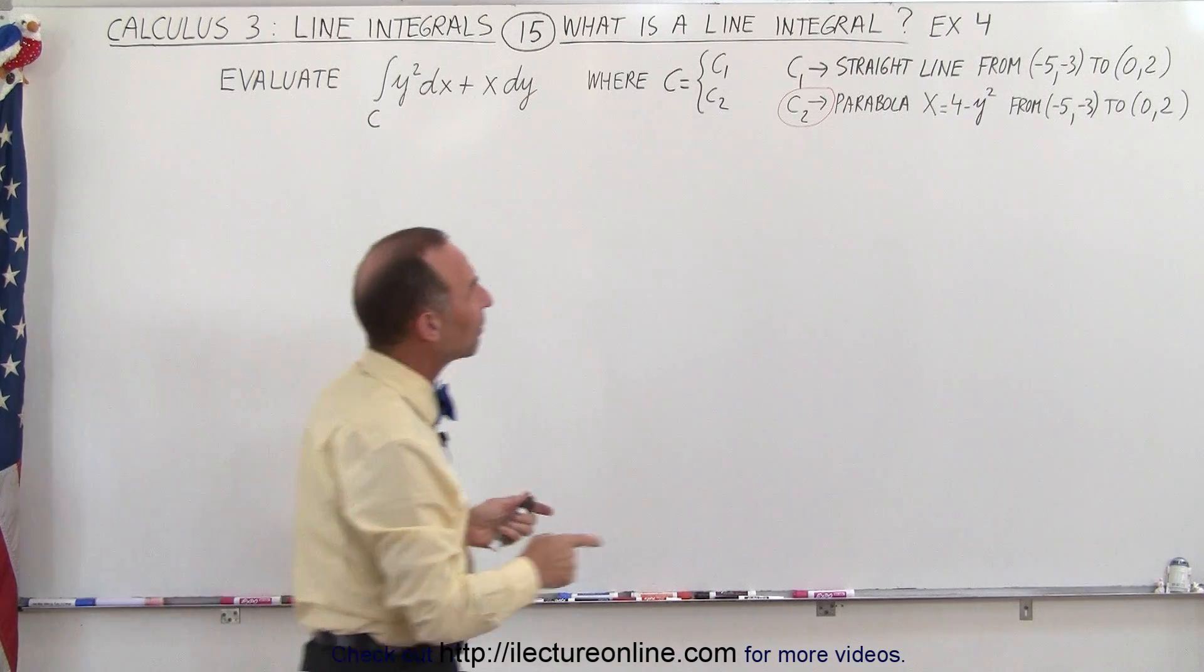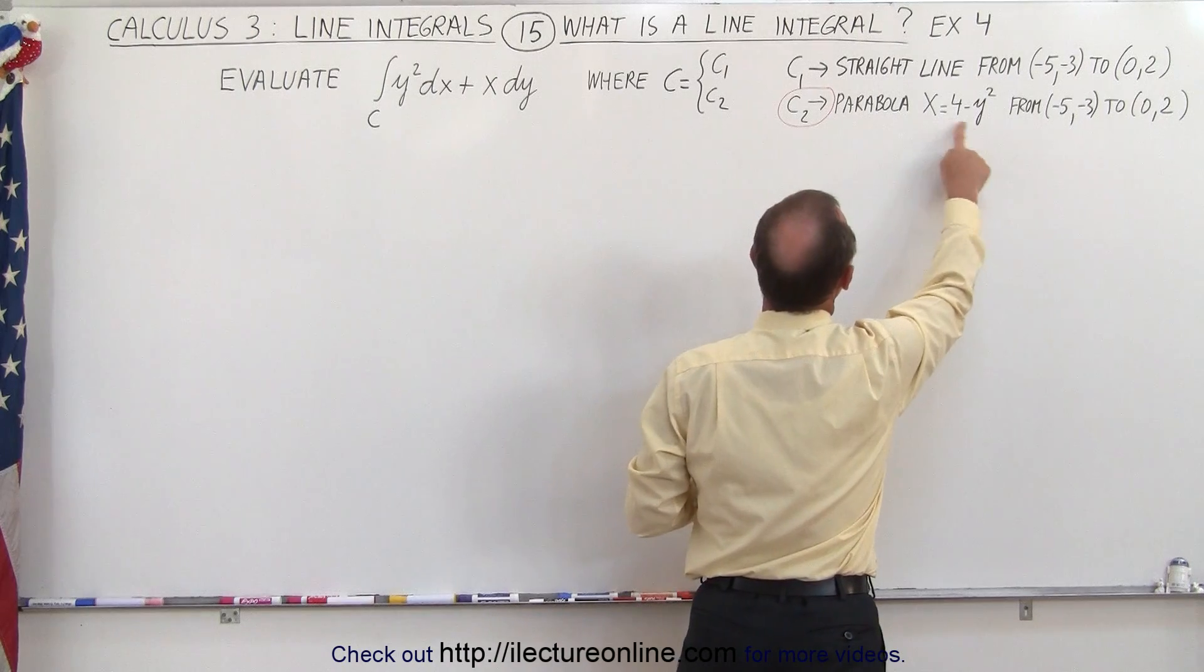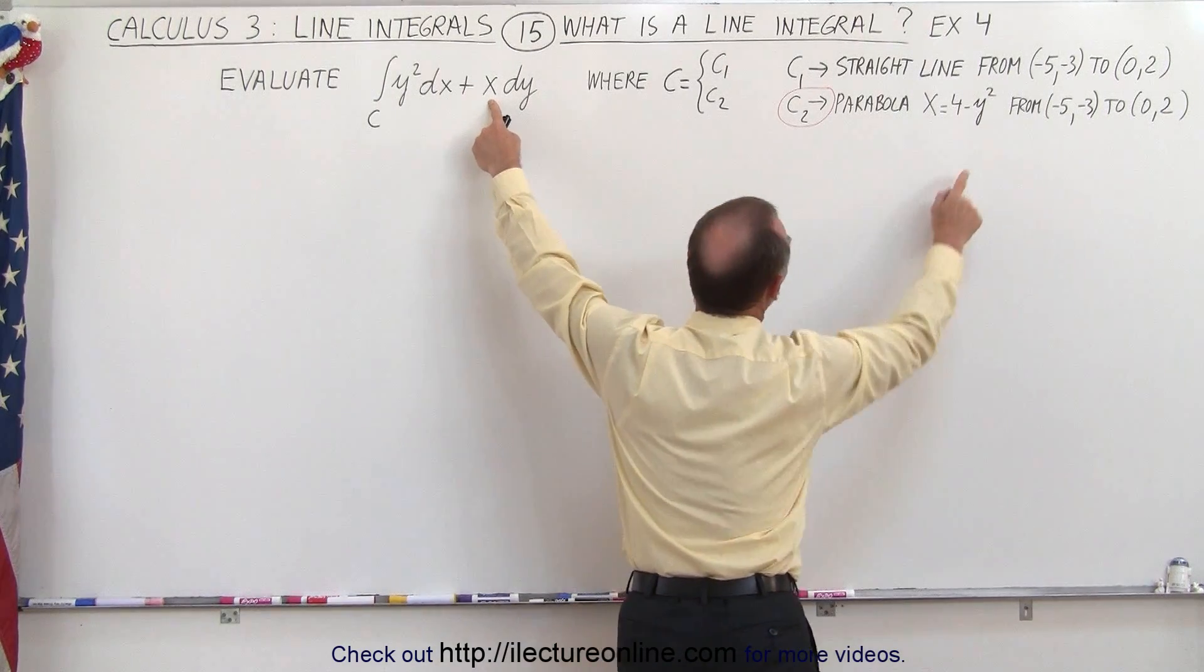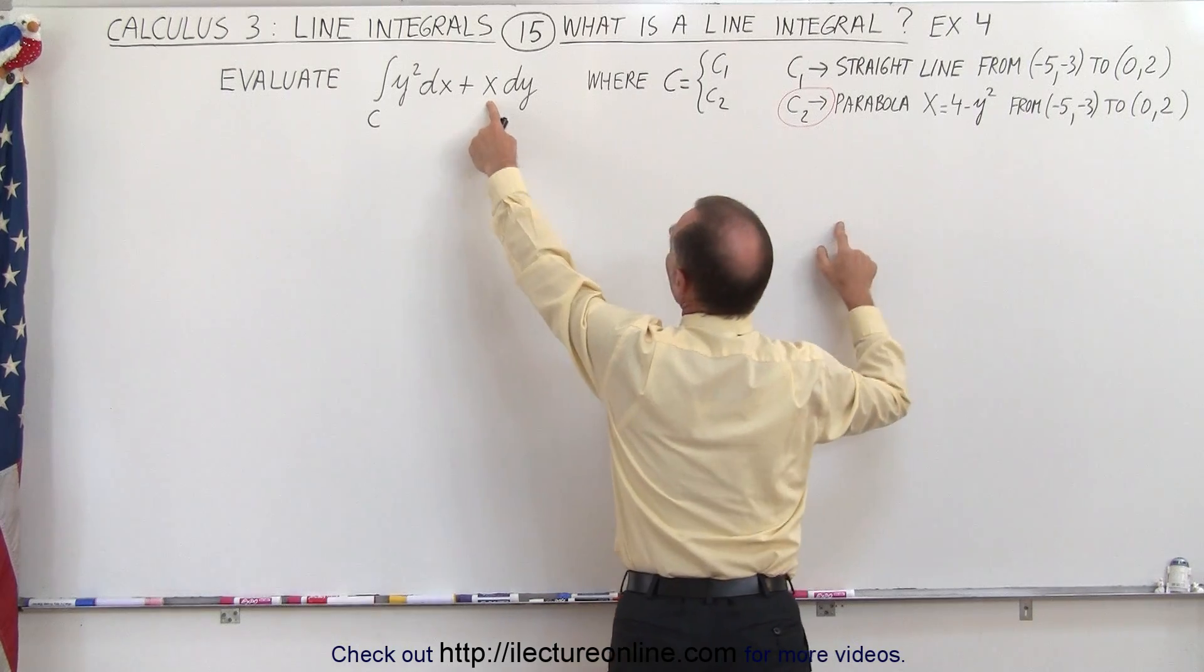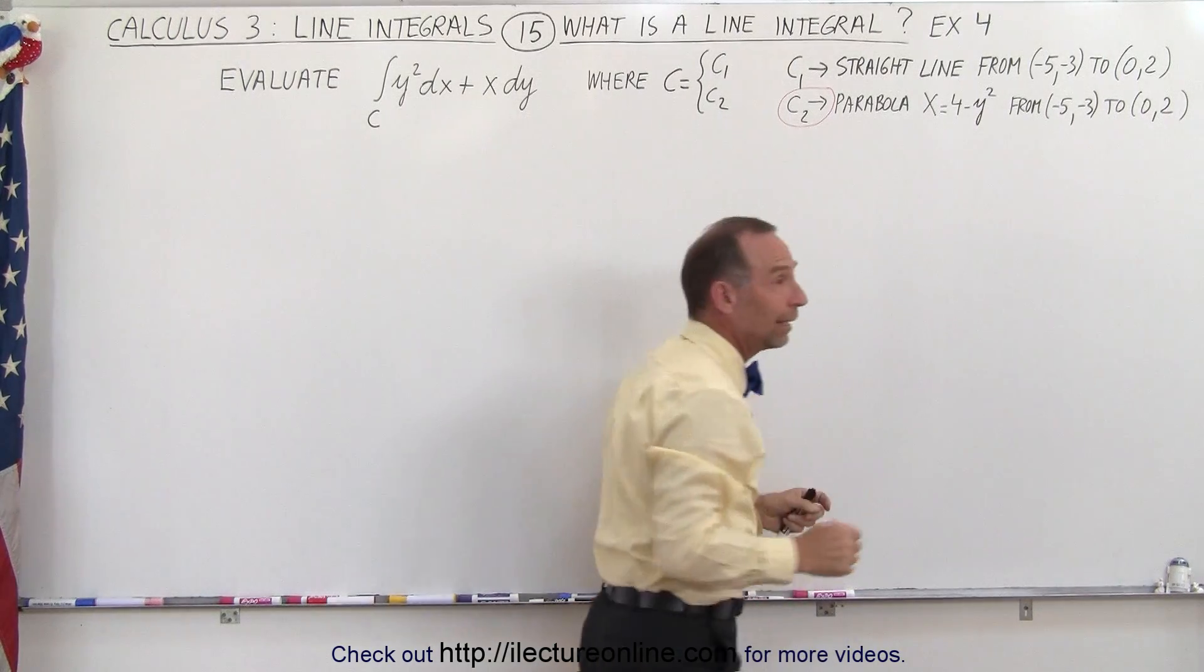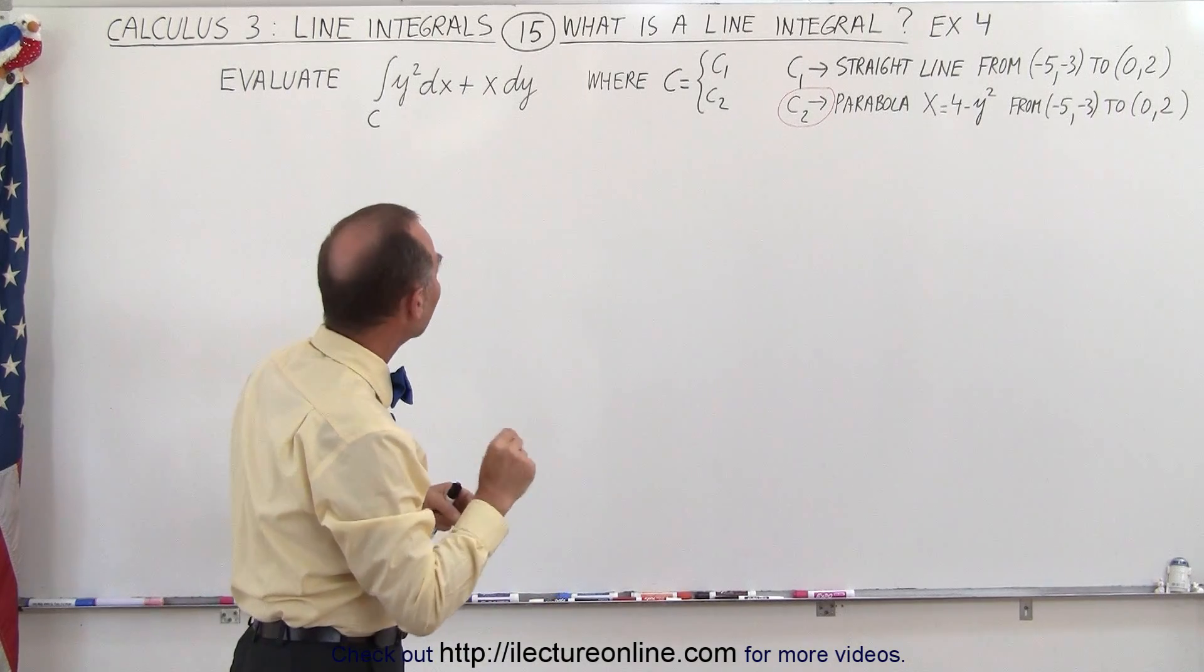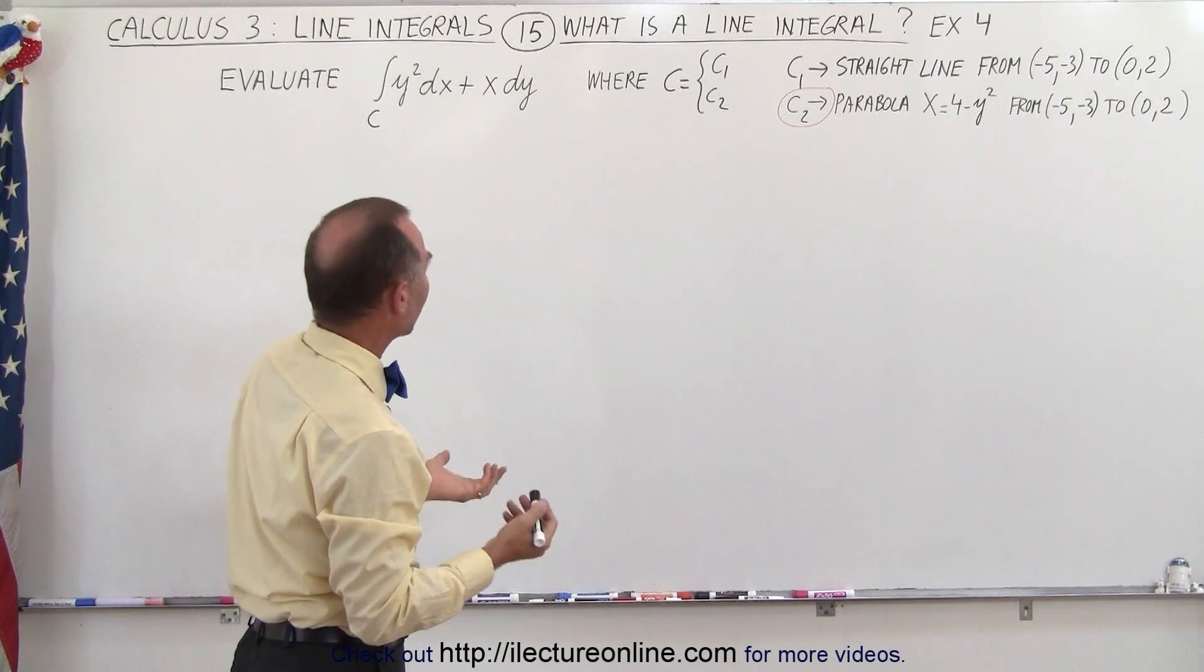Well, it turns out since we have a relationship between x and y, we could potentially replace this x by 4 minus y squared and this dx by what dx is equal to, and then we can express everything in terms of y. I think that would be the way to go, so let's try that.